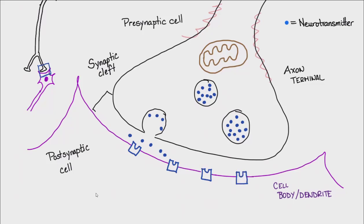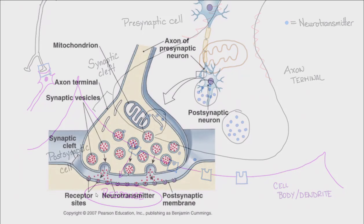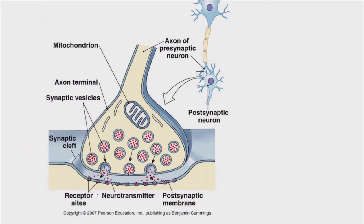The neurotransmitters diffuse out and start binding to the receptors embedded in the postsynaptic cell. Whenever a ligand binds to a receptor, that usually initiates some sort of response. We don't know what that response is yet — it largely depends on the type of receptor — but that's the basic gist of what happens at a chemical synapse.